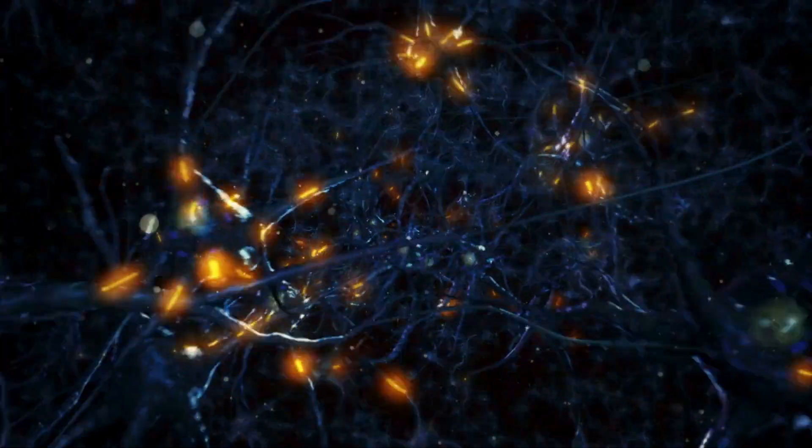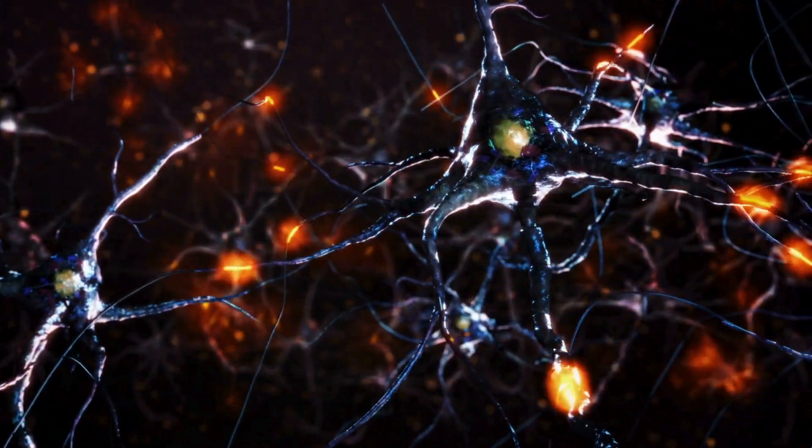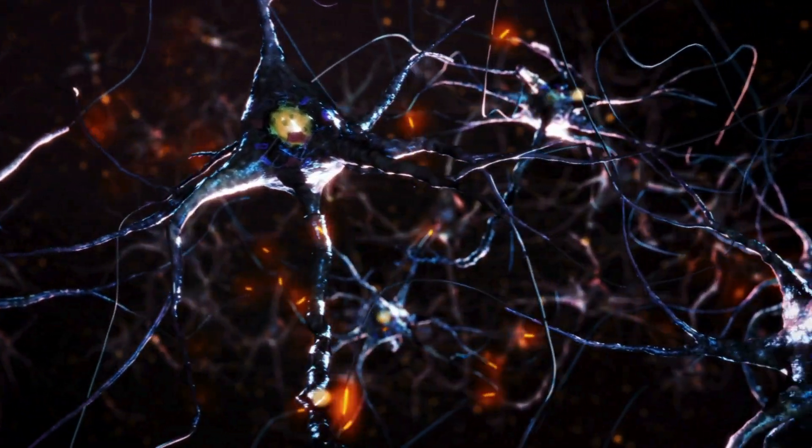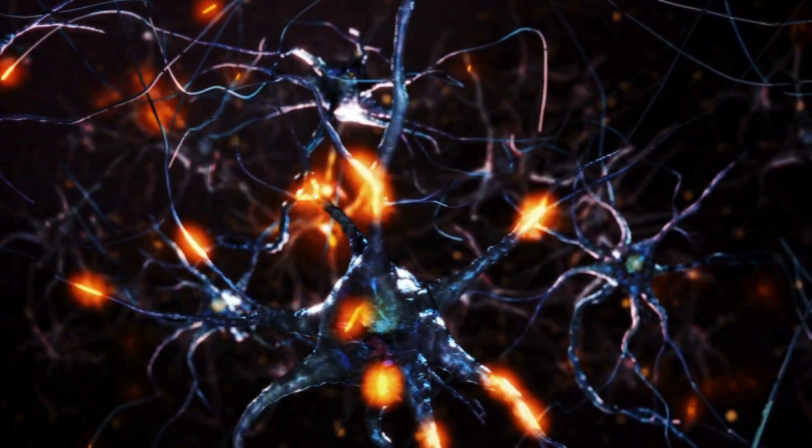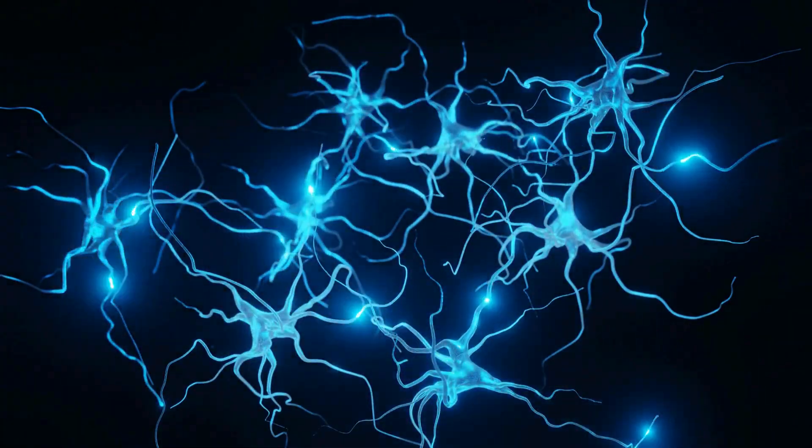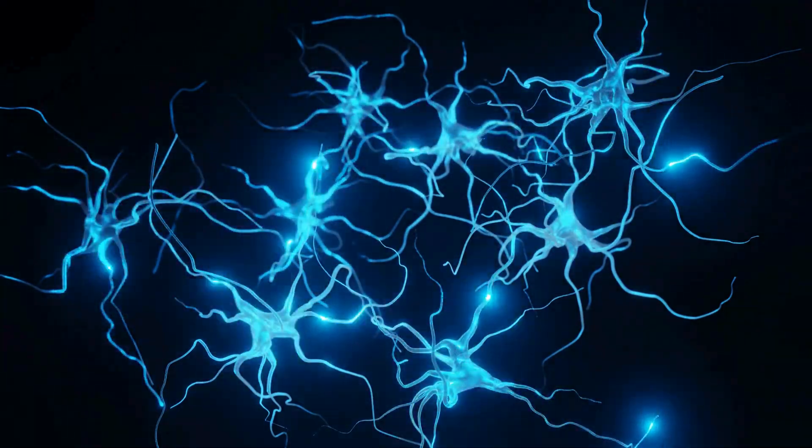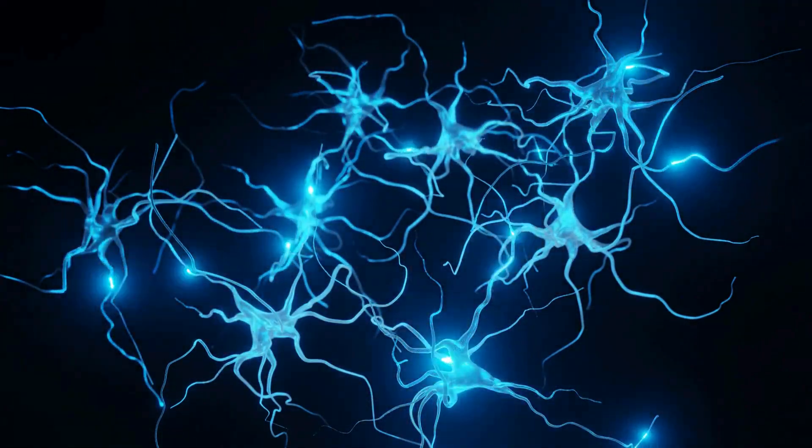Oligodendrocytes are a type of glial cell found in the central nervous system. Their main function is to form and maintain myelin, a fatty substance that wraps around the axons of neurons. This myelin sheath acts as electrical insulation, allowing nerve impulses to travel quickly along the neurons.